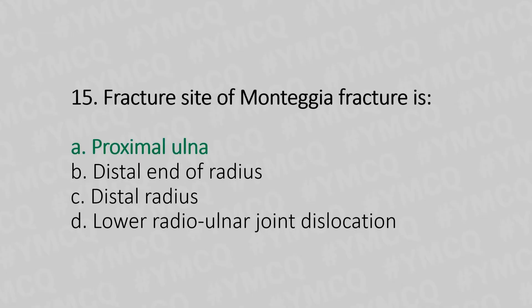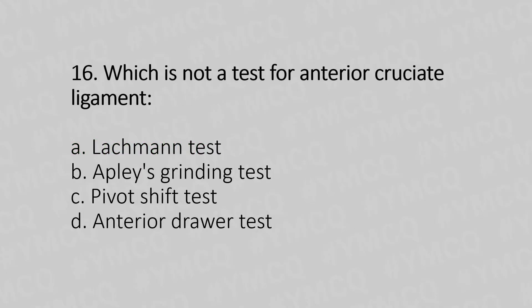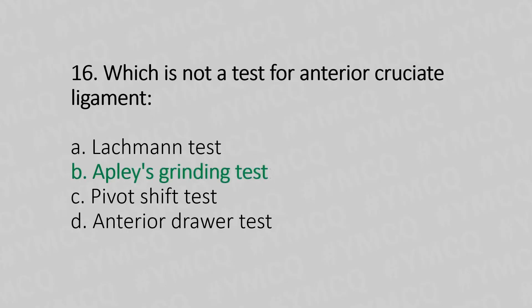Question 16: Which is not a test for the anterior cruciate ligament? Option A: Richman's test. Option B: Apley's grinding test. Option C: pivot shift test. Option D: anterior drawer's test. The answer is option B — Apley's grinding test.